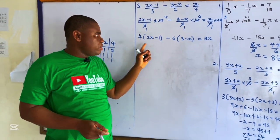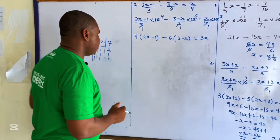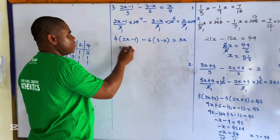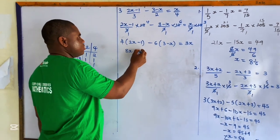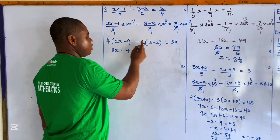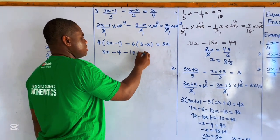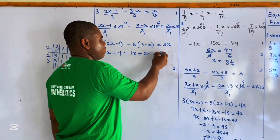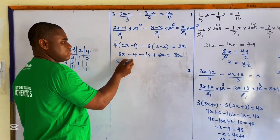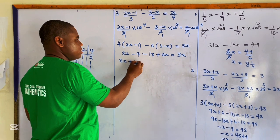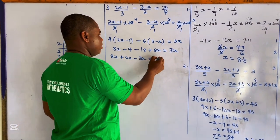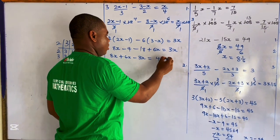Now expanding the brackets: 4 times 2x is 8x, and 4 times negative 1 is negative 4. Then negative 6 times 3 is negative 18, and negative 6 times negative x is plus 6x. So we have 8x minus 4 minus 18 plus 6x equals 3x.